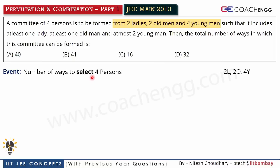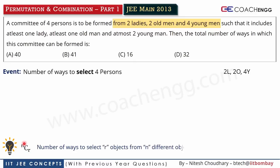What is the selection principle in PNC? That is NCR. This represents the number of ways to select R objects from N different objects. This formula applies when we are selecting from different objects. Obviously, all the persons here will be different, so we need to select four persons from them using NCR.